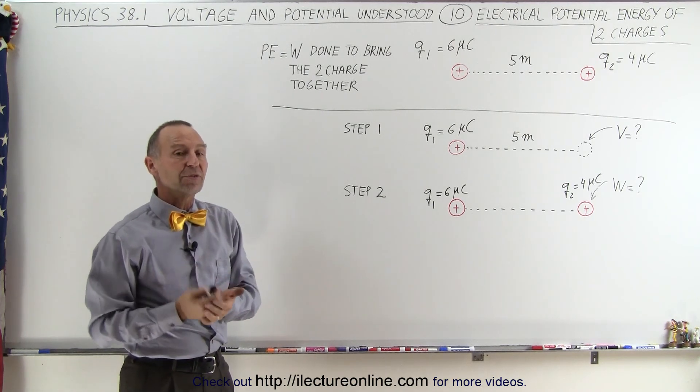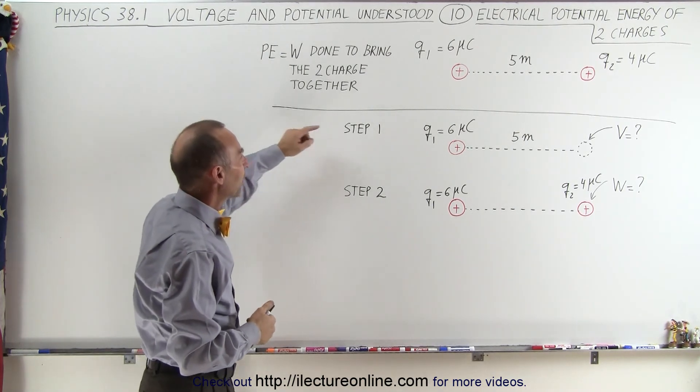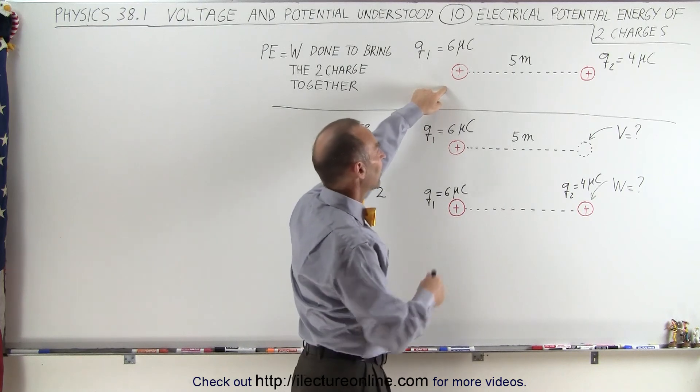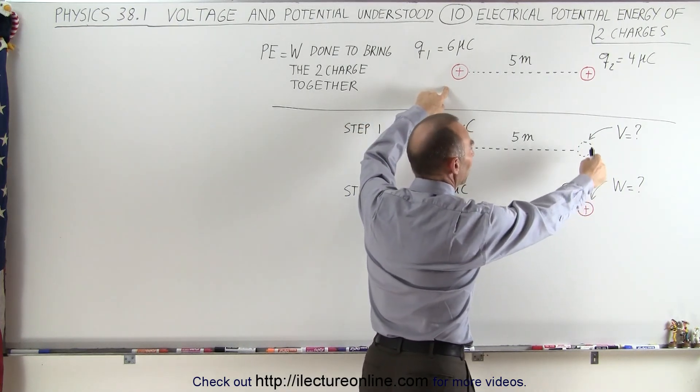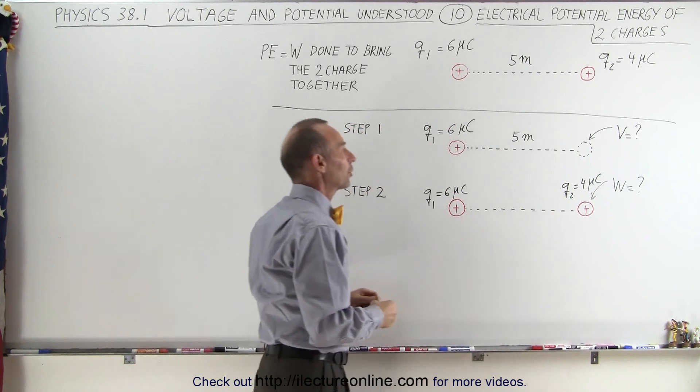The way to do that is in multiple steps. The first thing we're going to do is place one charge where it's located, but we're leaving the other charge out of it, and we're going to calculate the voltage at that particular location.